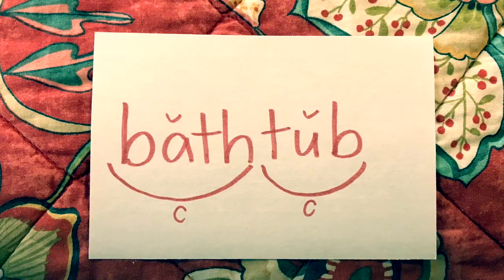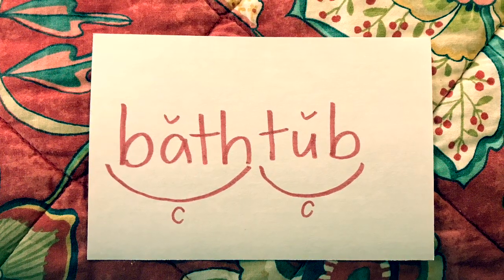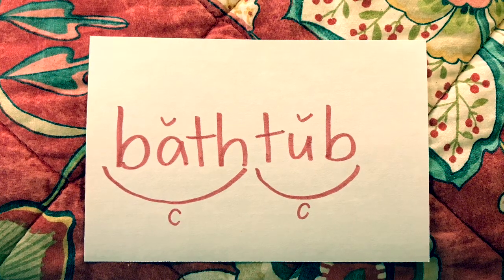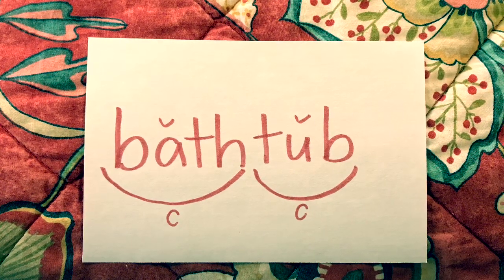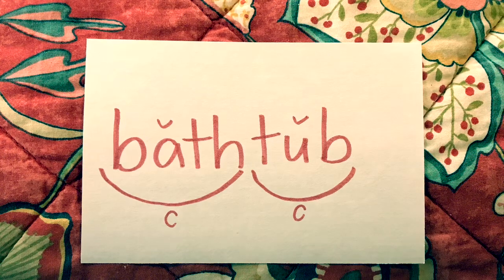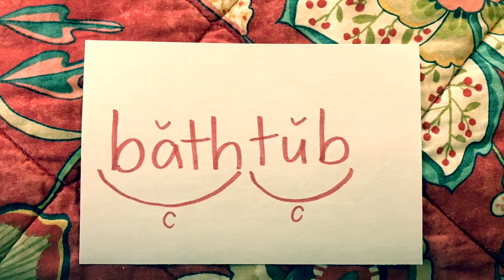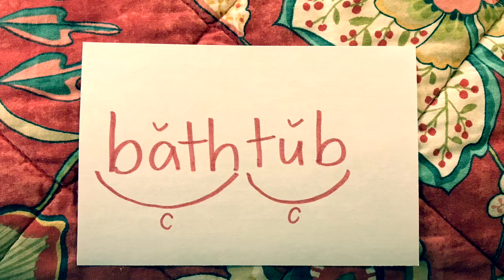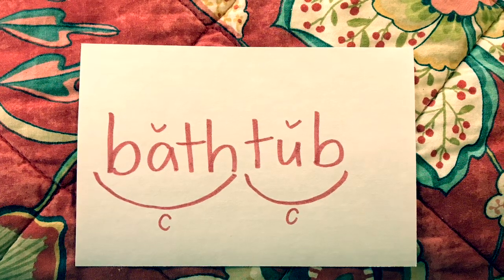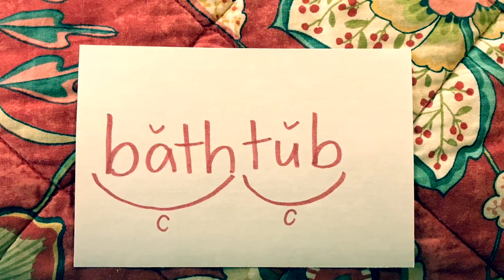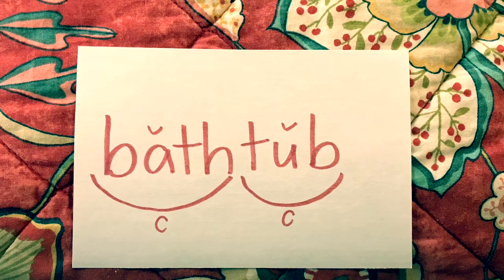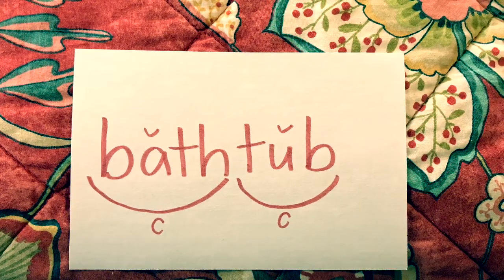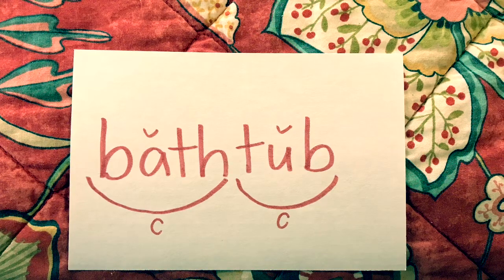Check out my next example. The word is "bathtub." When I check with my chin, I hear two syllables — "bathtub" — my chin moves twice. So I mark each syllable: "bath" and "tub." Then I listen to those vowel sounds. "Bath" — that's a short A, so it's closed. And "tub" — I already decided that was a short U, so it's a closed syllable. There you go.